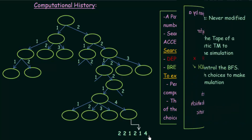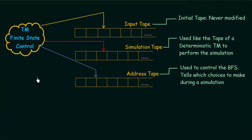In order to construct a deterministic Turing machine for a given non-deterministic Turing machine, we use a three-tape construction. Here we have the Turing machine's finite state control using three tapes — applying the concept of multi-tape Turing machines that we studied in previous lectures. The equivalent deterministic Turing machine for a non-deterministic Turing machine will have three tapes.